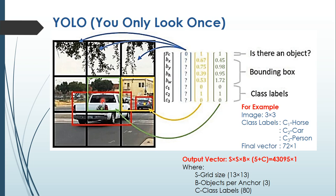When coming to the middle box, if an object is present from the class labels even partially, the value is 1. Here a car is present partially, and in the next box the car is present fully. In these two cases, the first value of the vector will become 1. The next four elements of the vector are the bounding box values. Here if you consider this car, the bounding box is represented in red color. These four elements are the top-left corner XY coordinates: BX, BY, and the bounding box height BH and width BW. These four values are represented as the second, third, fourth, and fifth elements of the vector.